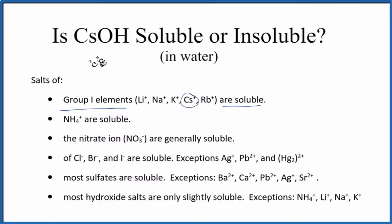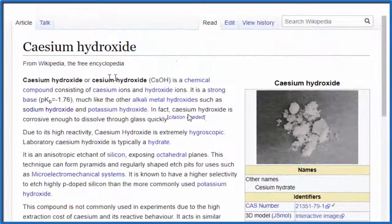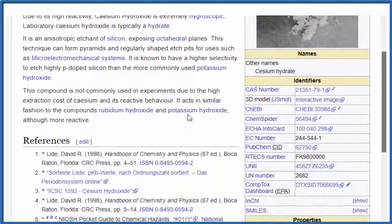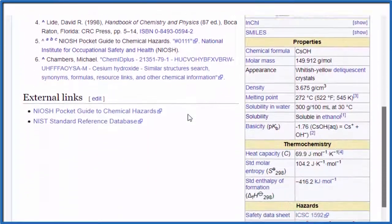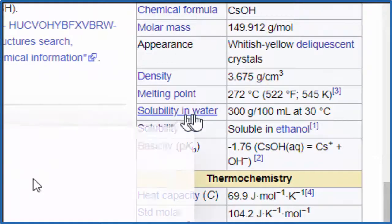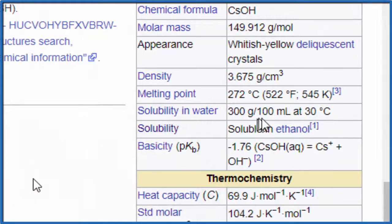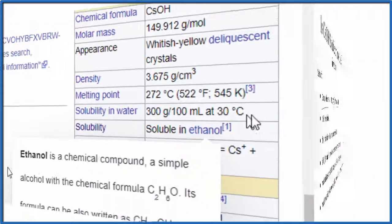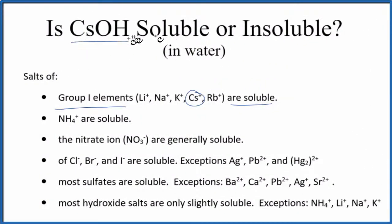You won't see cesium on the type of solubility chart you're given in school, but we can look at some experimental data just to check and make sure we have the right answer. So here's our cesium hydroxide — this is what it looks like — and we're looking for solubility in water: 300 grams per 100 milliliters at 30 degrees Celsius. That's very soluble. So in answer to our question, cesium hydroxide is soluble in water. Both our rules and the experimental data show that.